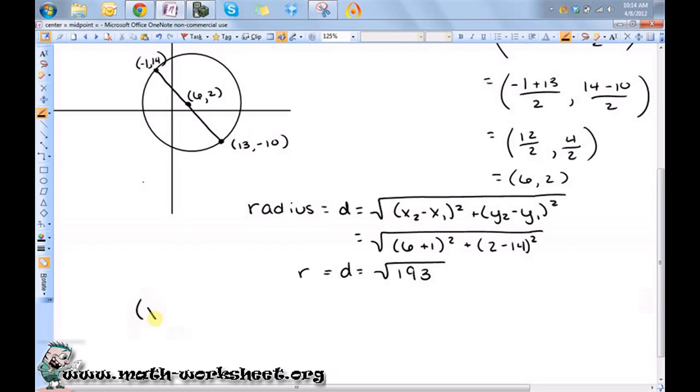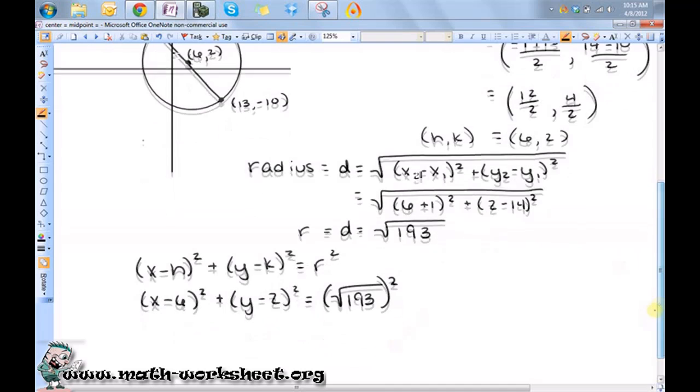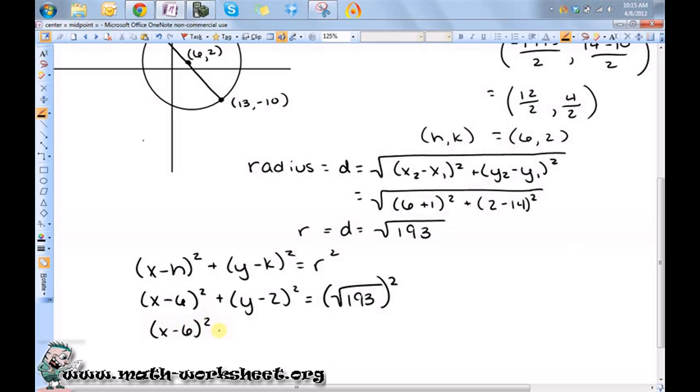Okay, so the standard form of an equation of a circle is x minus h squared plus y minus k squared equals r squared. So this was my h and k, so it's just x minus 6 squared plus y minus 2 squared equals the square root of 193 squared. So it's just x minus 6 squared plus y minus 2 squared equals 193.